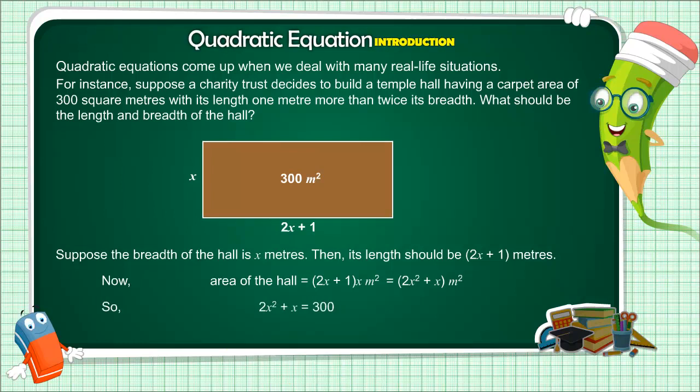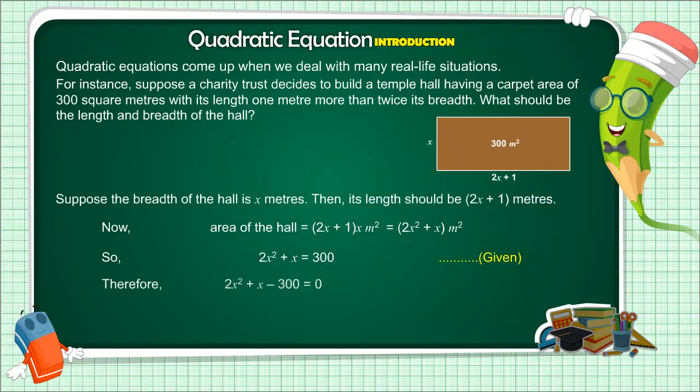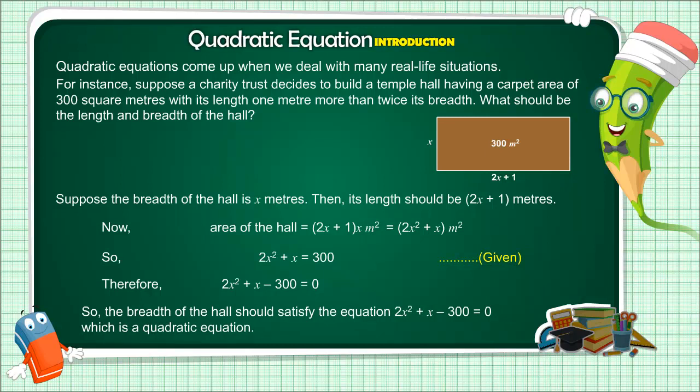So, 2x² plus x equals 300. Therefore, 2x² plus x minus 300 equals 0. So, the breadth of the hall should satisfy the equation 2x² plus x minus 300 equals 0, which is a quadratic equation.